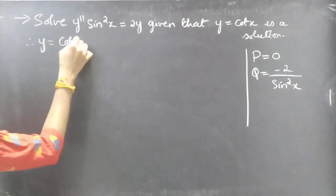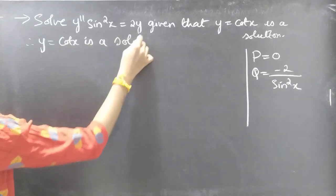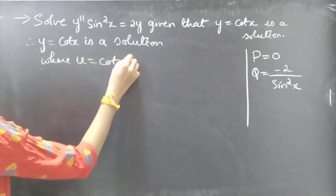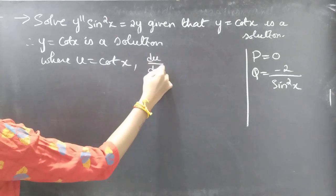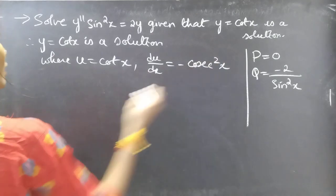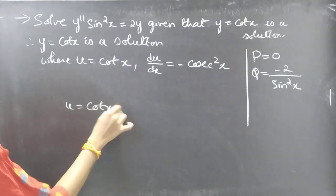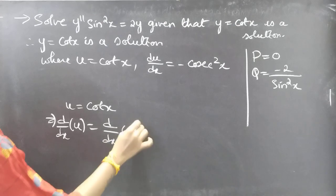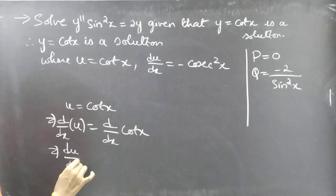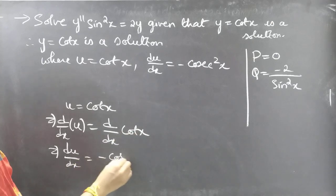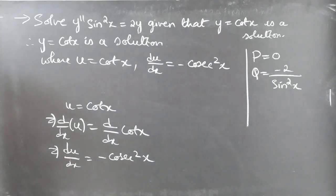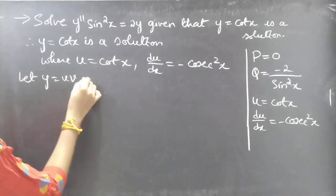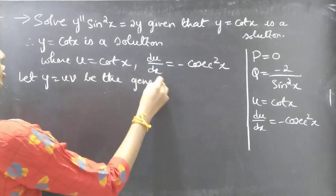Therefore y = cot x is a solution, so we set u = cot x. We need to find du/dx: differentiating u = cot x with respect to x gives du/dx = −cosec²x. Now let y = u·v be the general solution.